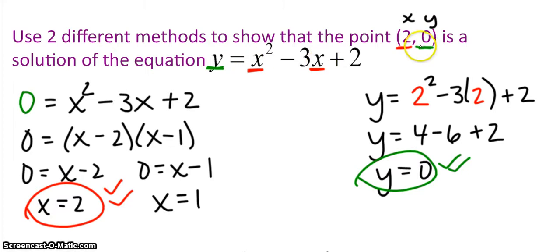The first method is to plug in your y value. I plugged in 0 for my y, and then I went through and I solved the equation. This is a quadratic, it factors very nicely, set each factor equal to zero because of the zero product property. So x is equal to 2, and x is equal to 1. Well, that's one of our solutions, x is equal to 2, it matches this value right here. So we just showed that the point (2, 0) is a solution.